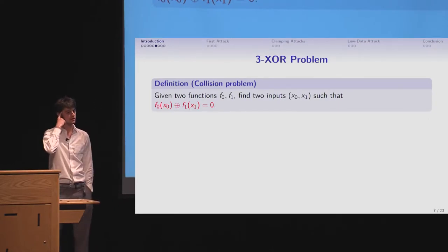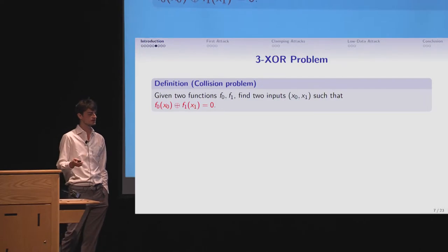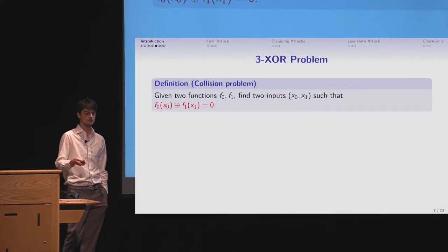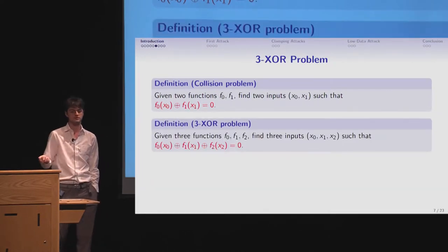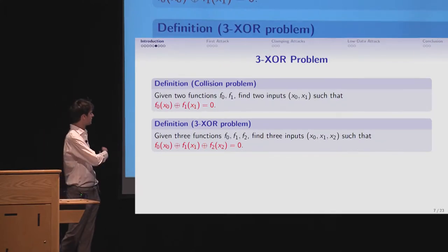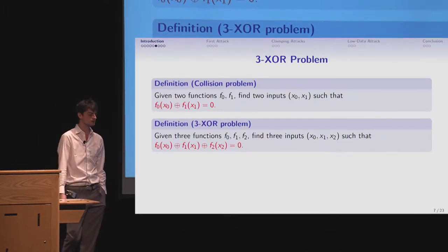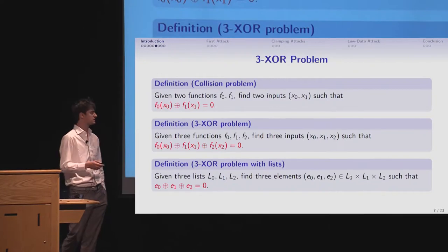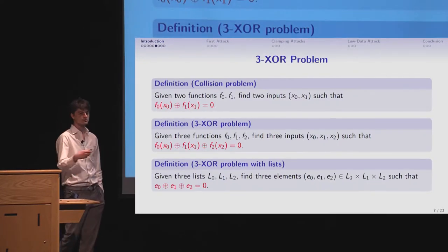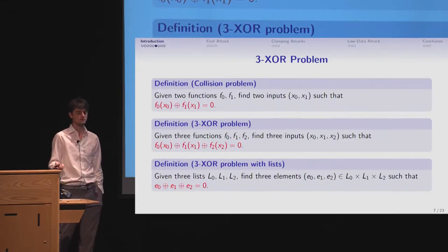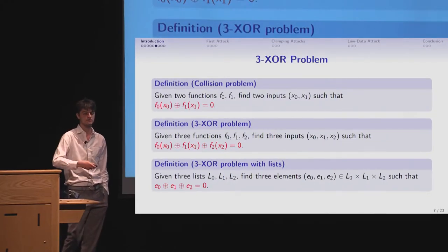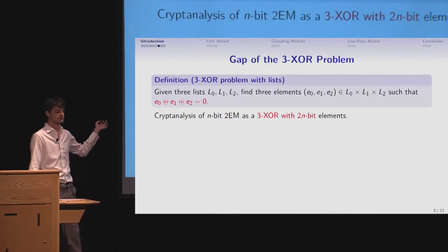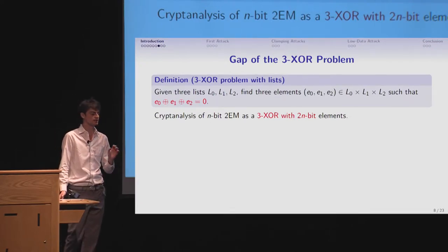So let's look at the 3-XOR problem. You can see the 3-XOR problem as a generalization of the well-known collision problem. Collision problem, you have two functions. You want to find two inputs so that those two functions xor to zero. The 3-XOR problem, you have three functions. And you want to find three inputs so that all the three functions on these inputs xor to zero. And in this talk, I often use the version with lists, which is quite equivalent. You're given three lists, and you want to find three elements of that list so that the elements xor to zero. You can think of building this list just by querying the function and having it stored in memory.